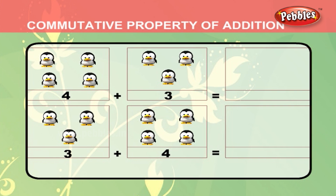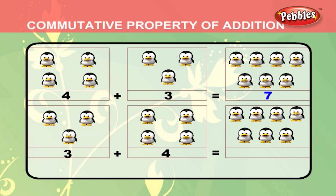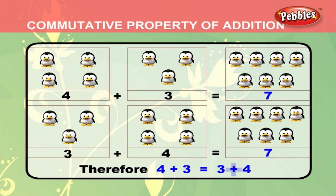Let us see one more example. There are 1, 2, 3, 4 birds in the first box and 1, 2, 3 birds in the second box. Below, there are 1, 2, 3 birds in the first box and 1, 2, 3, 4 birds in the second box. That is 3 plus 4, which is also equal to 7. Therefore, 4 plus 3 is equal to 3 plus 4.